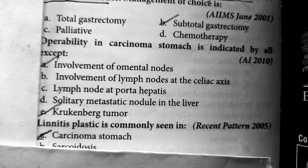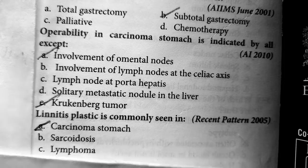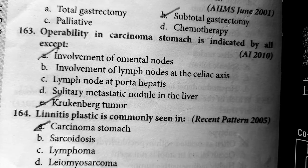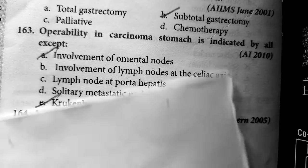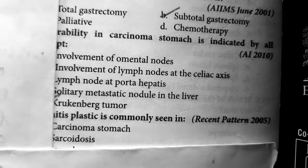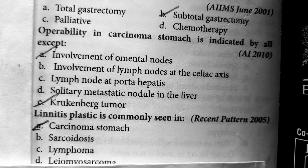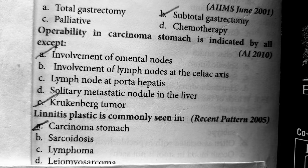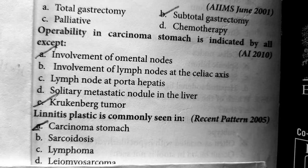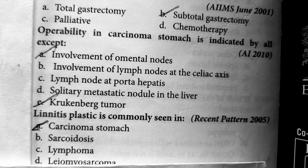Last question of this lecture: Linitis plastica is commonly seen in carcinoma of the stomach. It is a type of diffuse carcinoma of the stomach. Thank you for watching this lecture.